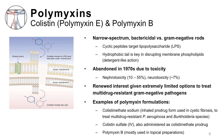Let's briefly discuss the polymyxins. In contrast to the glycopeptides and lipopeptides, which are narrow-spectrum antibiotics with activity against gram-positive cocci, the polymyxins are narrow-spectrum agents with activity against gram-negative pathogens. Polymyxins are cyclic peptides that target LPS. Their hydrophobic tail is involved in the disruption of membrane phospholipids, as seen in the accompanying picture. The polymyxins were abandoned in the 1970s due to toxicity, including nephrotoxicity, which is quite common, and neurotoxicity.